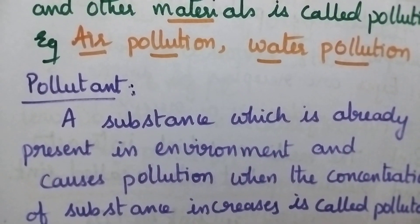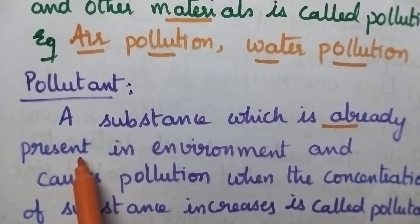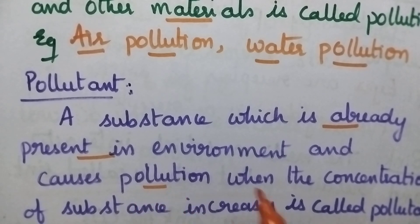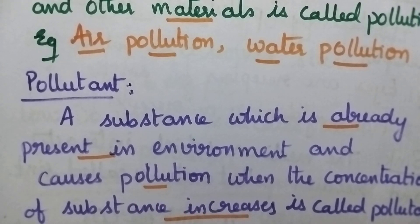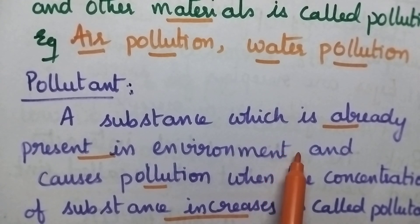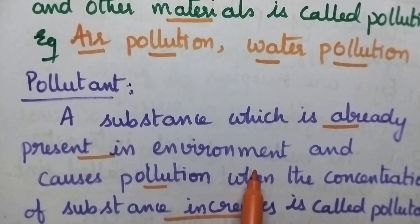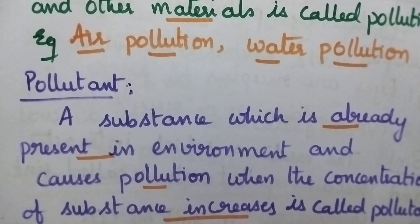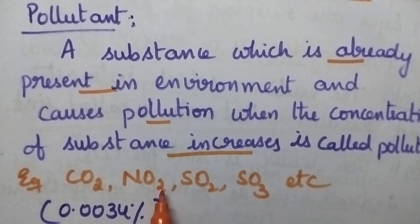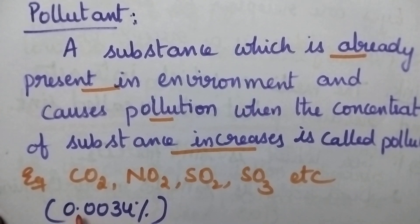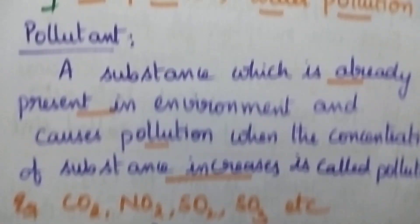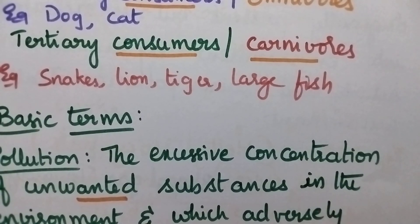Pollutant means the substance is already present in the environment, but it causes pollution when its concentration increases. Good examples include carbon dioxide, nitrogen dioxide, sulfur dioxide, sulfur trioxide, etc. For instance, air consists of 0.0034% of carbon dioxide. Because of industrialization, if there is any increase in its concentration, it causes pollution — then carbon dioxide is called a pollutant.